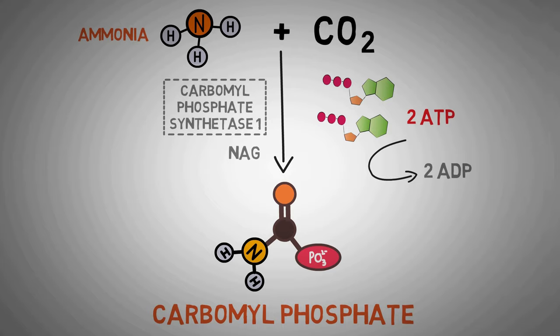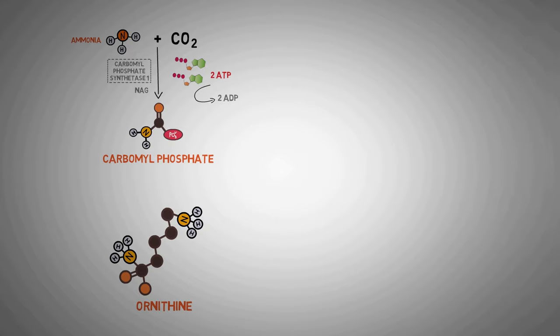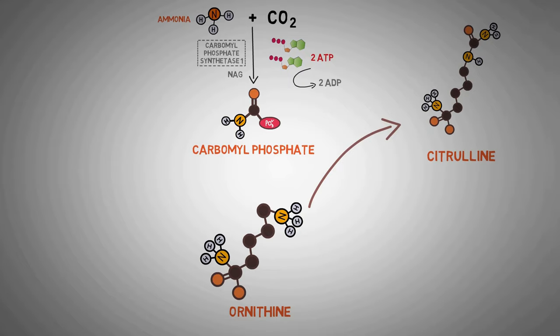Our next reaction also takes place in the mitochondria where the carbamoyl phosphate that we just synthesized from ammonia combines with one molecule of ornithine and this leads to the formation of citrulline. Now let's understand what just happened in this reaction. Ornithine is also an amino acid but it only has a role in our urea cycle. It is not a part of any protein or any other biochemical cycle in our body. As you can see in the structure of ornithine, it already has two nitrogen-containing groups.